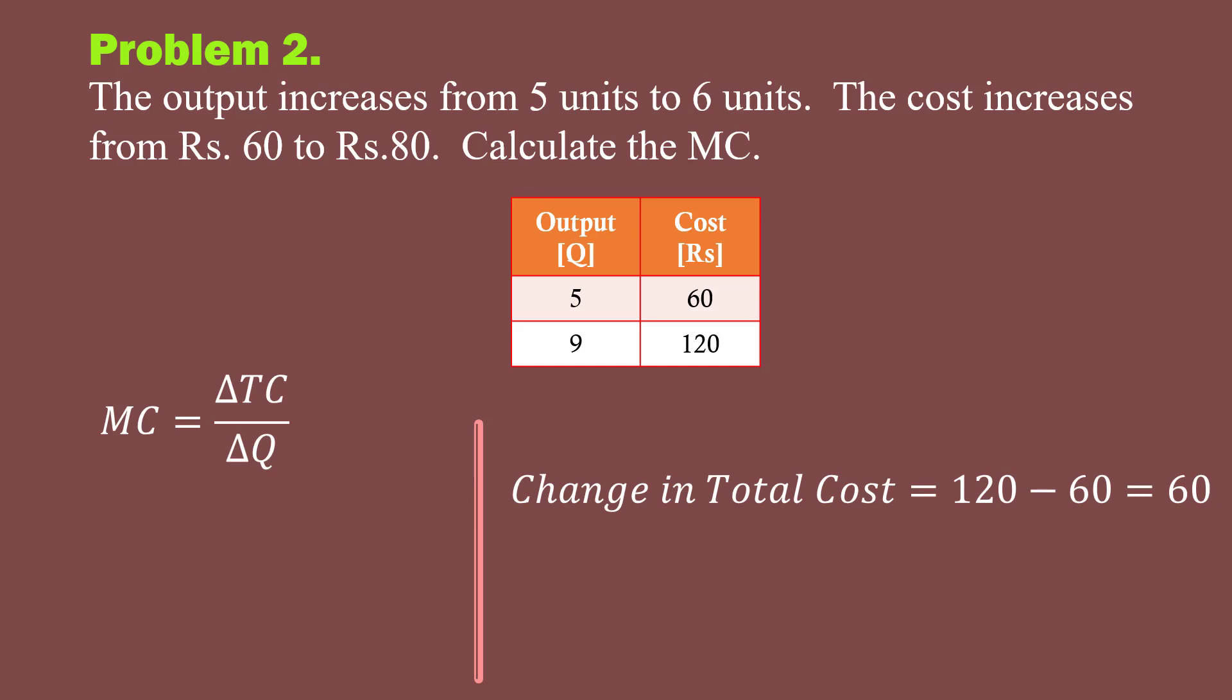Change in cost 120 minus 60 is 60. Change in output 9 minus 5 is 4. Marginal cost equals 60 over 4, which is 15. Marginal cost is 15 rupees. So, our final conclusion is, depending on the problem, students must learn to use the appropriate formula.